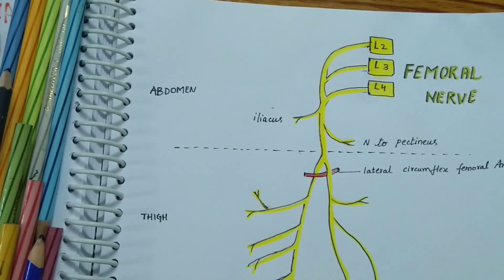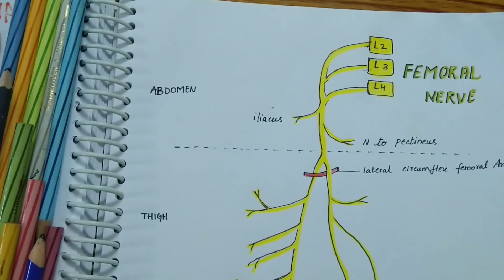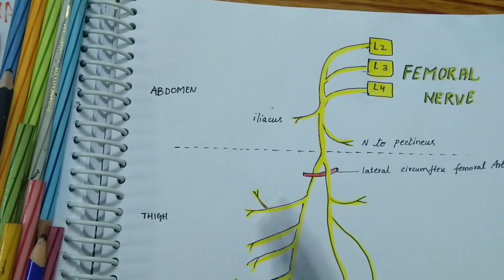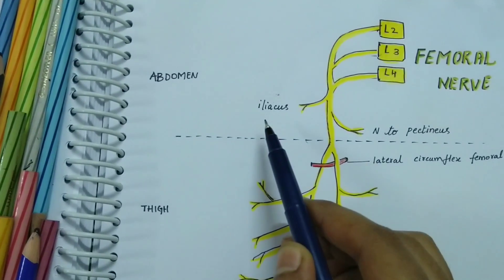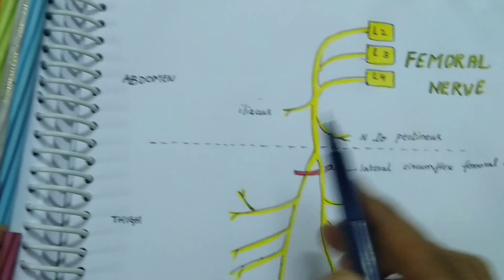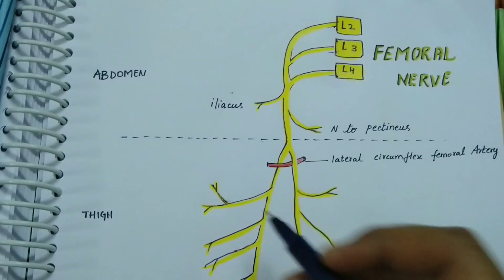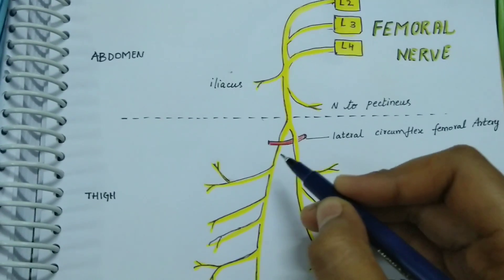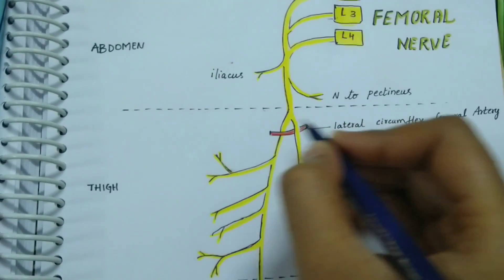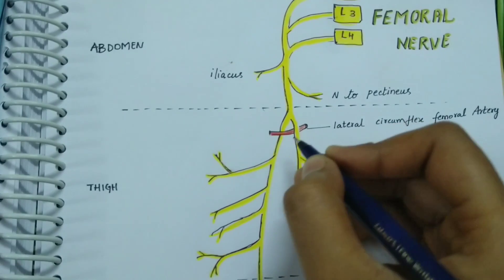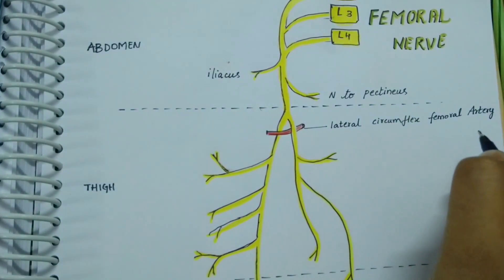It emerges to the lateral border to pass between the thigh and the abdomen. It gives branches for the iliacus and to pectineus. In the thigh, it divides into the anterior and the posterior division by the lateral circumflex femoral artery.